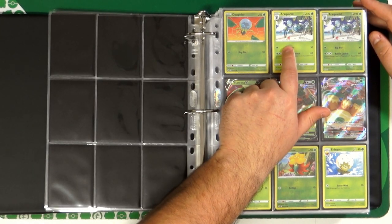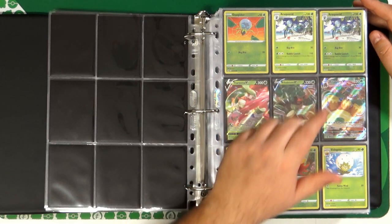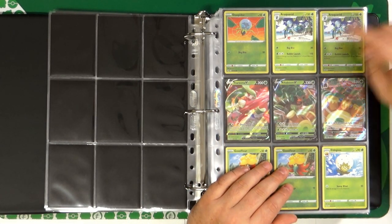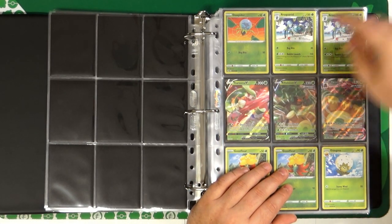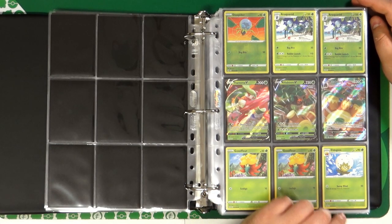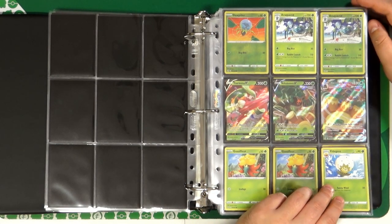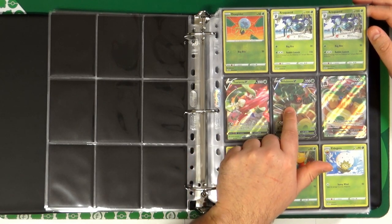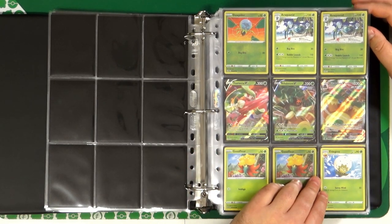Araquanid is a very curious card because this artwork goes together with the one of Mudkip that we will see in the next pages. We have Tsareena, Rillaboom and Rillaboom VMAX.